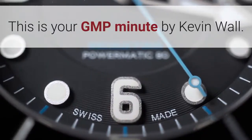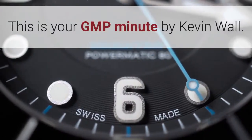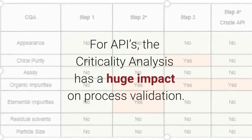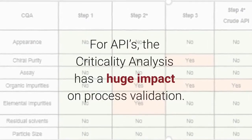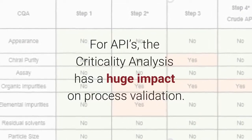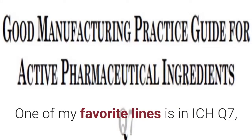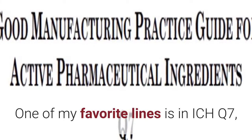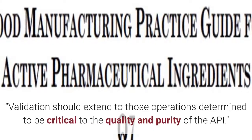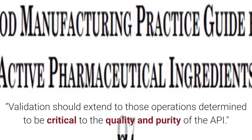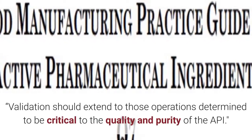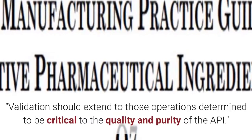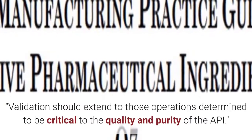This is your GMP Minute by Kevin Wall. For APIs, the criticality analysis has a huge impact on process validation. One of my favorite lines is in ICH Q7: 'Validation should extend to those operations determined to be critical to the quality and purity of the API.'